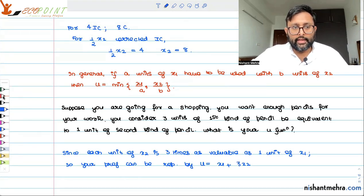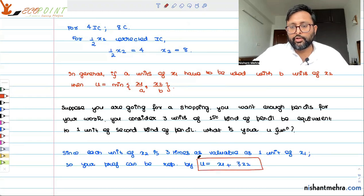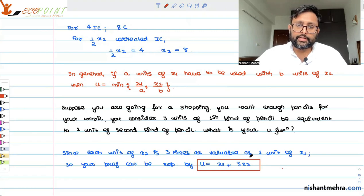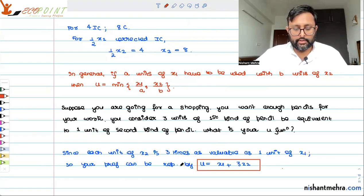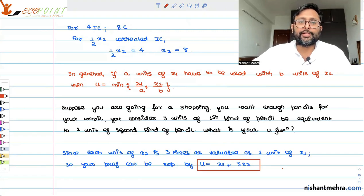So this becomes your utility function. You should be able to decipher what kind of utility function they are talking about, and in case the slope is not one-to-one, you should know how to write the utility function. I hope this was a little helpful to you. Thank you for your time.